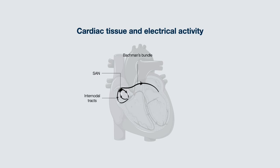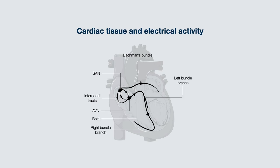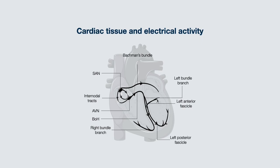The electrical activity reaches the ventricles via the AV node, then to the bundle of His, left and right bundle branches, the fascicles, and eventually to the Purkinje fibers. An important note is that the SA node is the natural pacemaker of the heart, meaning that the electrical activity is typically initiated here.